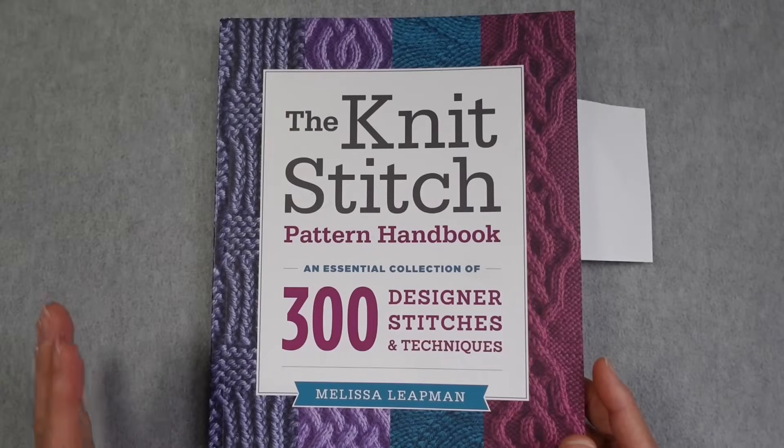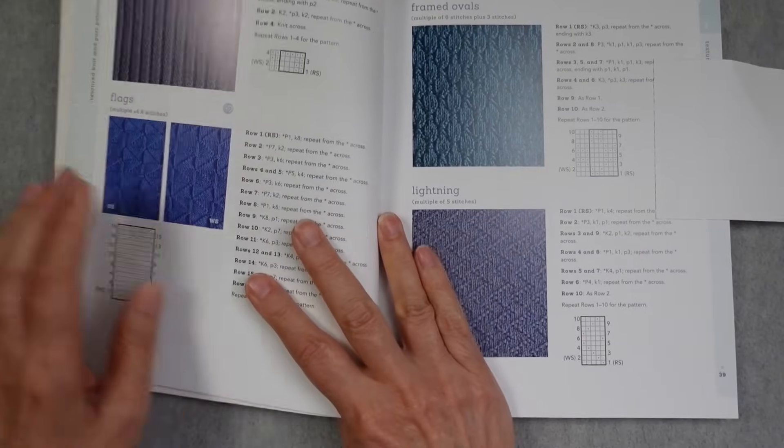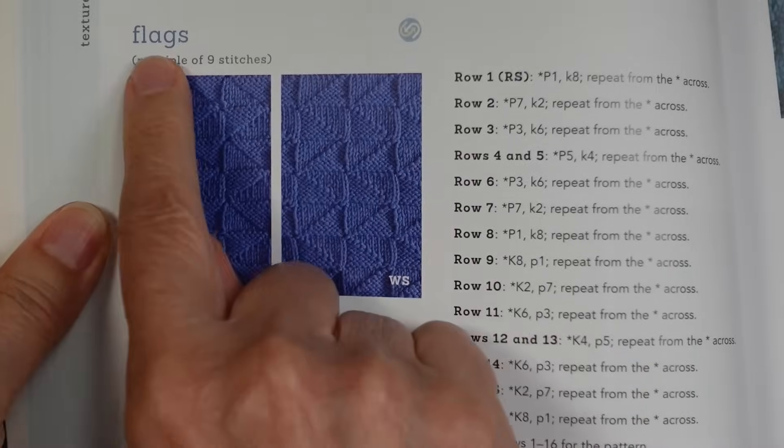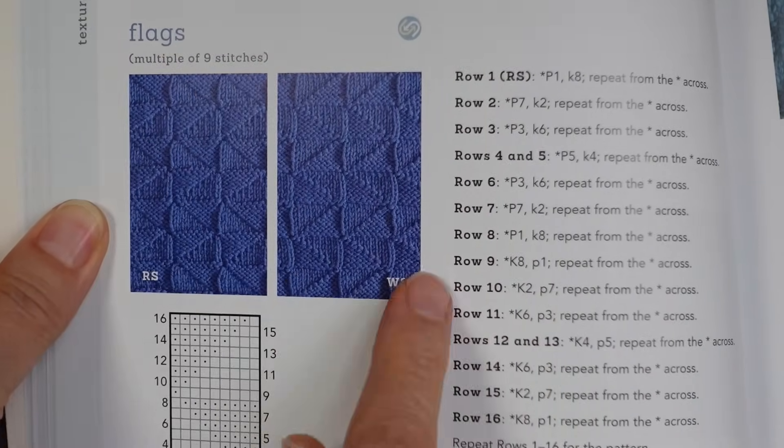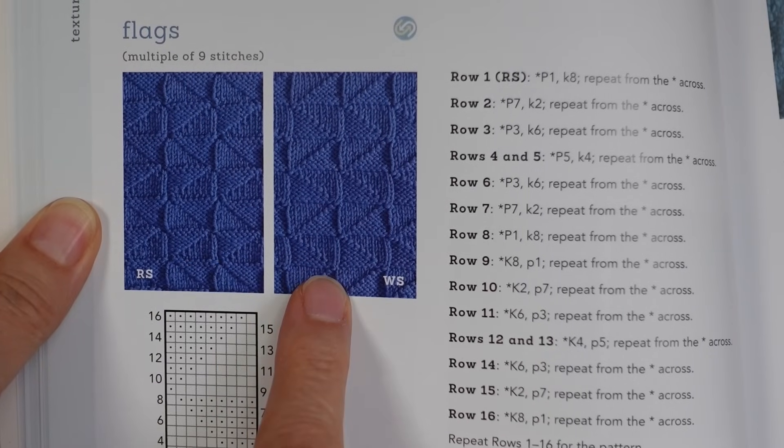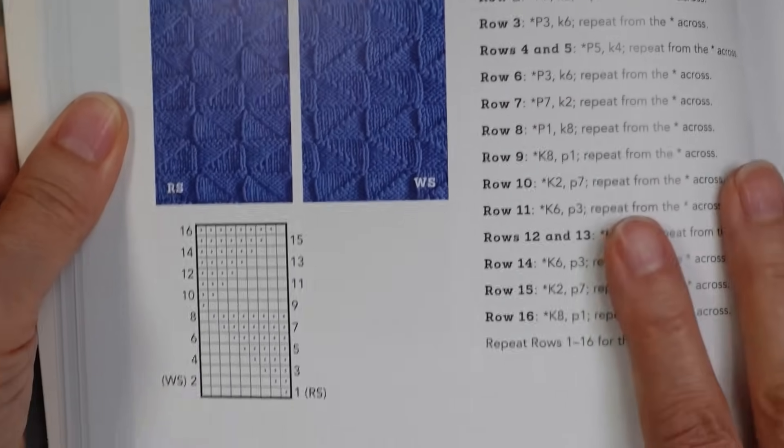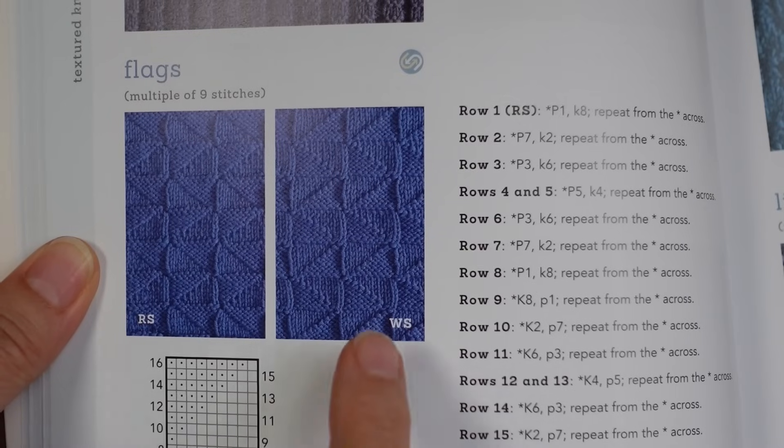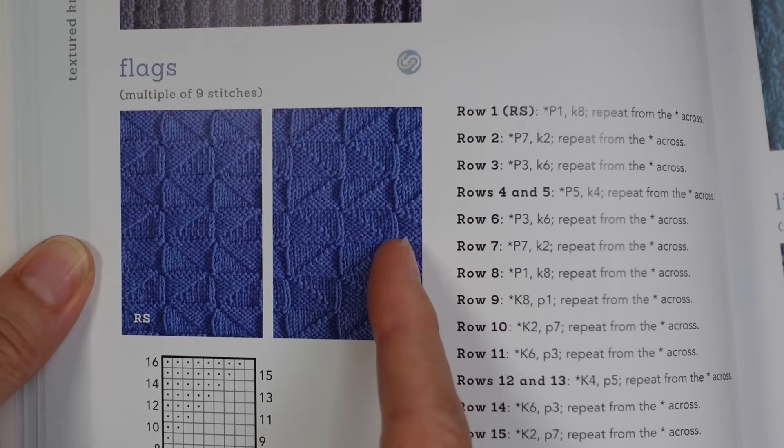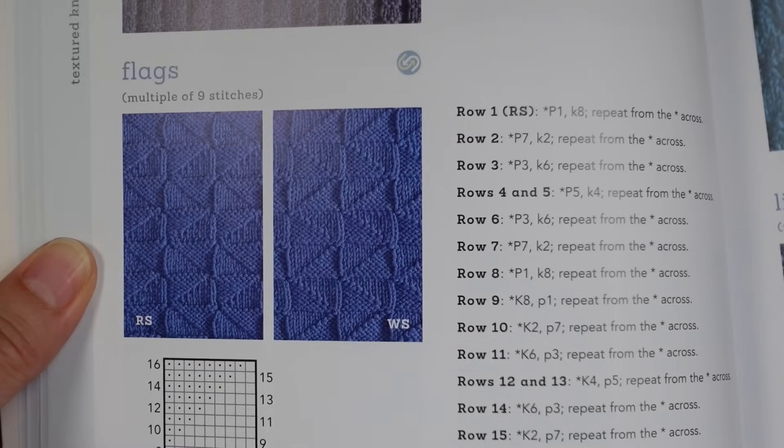If we want to use a stitch pattern, one of the sources for stitch patterns can be a stitch dictionary. So this is one example of a stitch dictionary. So let's look at the stitch patterns on this page. Here we have a pattern called flags that is a multiple of nine stitches. They're showing a picture of what the right side of the work and the wrong side looks like. They're basically mirror images of each other. It has written instructions and then it has charted instructions. The important thing to see is that you need a multiple of nine stitches so that you can work complete repeats of this stitch pattern, whether you are working flat or in the round.